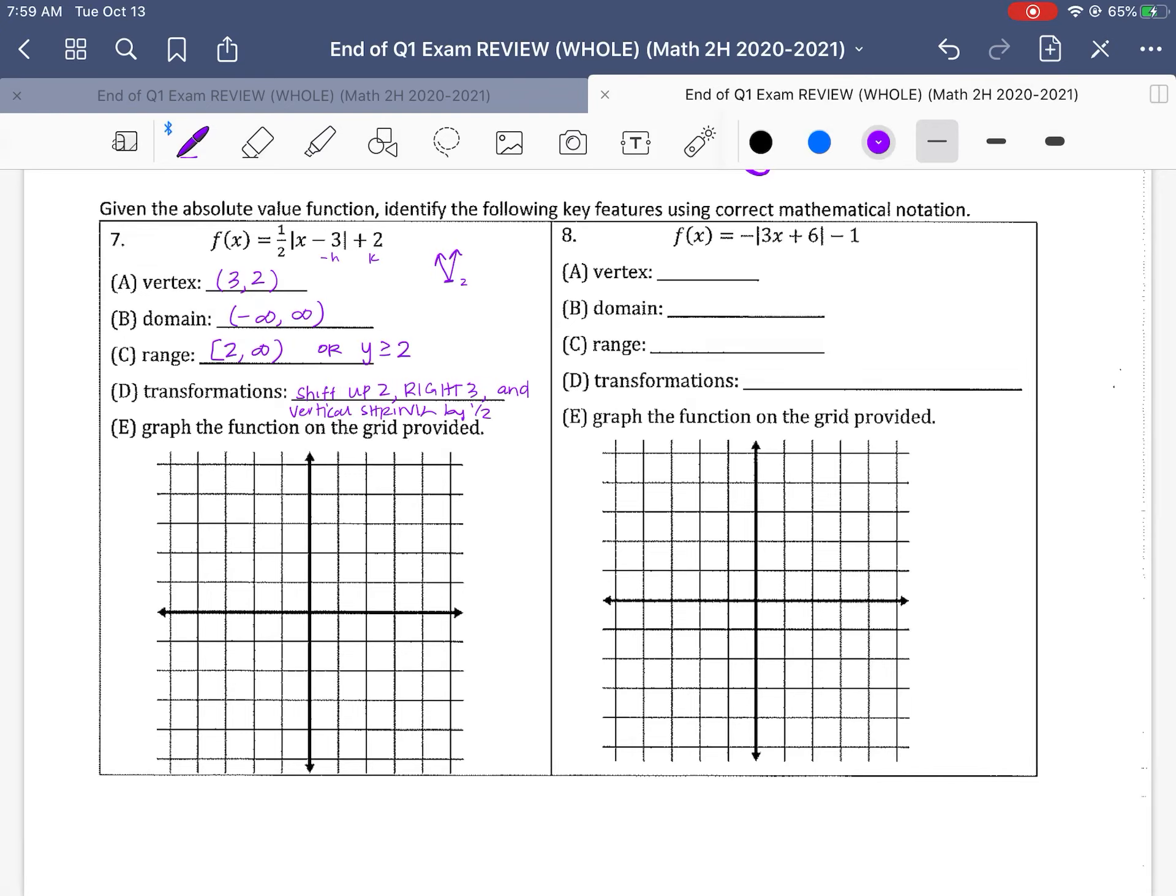So when we graph this, we go right 3, we go up 2. There's our vertex. And then we shrink it vertically by 1 half. So we go up 1 over 2, up 1 over 2, until we can create that v of our absolute value.